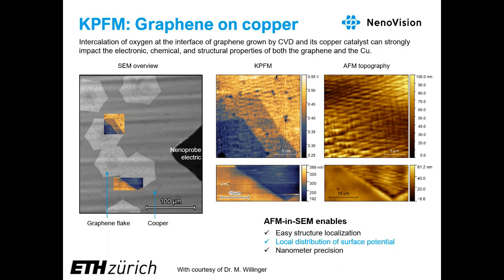Another example of Kelvin probe microscopy is graphene on a copper sample. Graphene is a two-dimensional material with great electronic, chemical, and structural properties, and its fabrication processes are still being investigated and optimized, making complex and precise characterization necessary. Graphene flakes grown by CVD on copper can be easily localized by SEM, and differences in roughness and surface potential on the graphene flake versus on copper can be measured. Thanks to AFM and SEM, the sample was measured with great precision in-situ, avoiding contamination from moving between different microscopes.